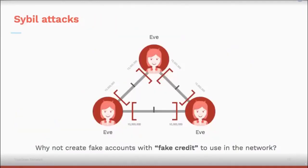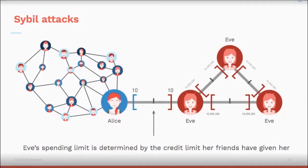Why not cheat the system by creating fake accounts with fake credit? Here's Eve — she has created credit lines with herself worth millions of dollars. But this attack doesn't work because Eve's spending ability in the network is ultimately constrained by the credit limit that her real friends have given her. Alice trusts Eve with $10, but not $10 million. Alice won't open a credit line with Eve's fake accounts. This is a fault-tolerant system.